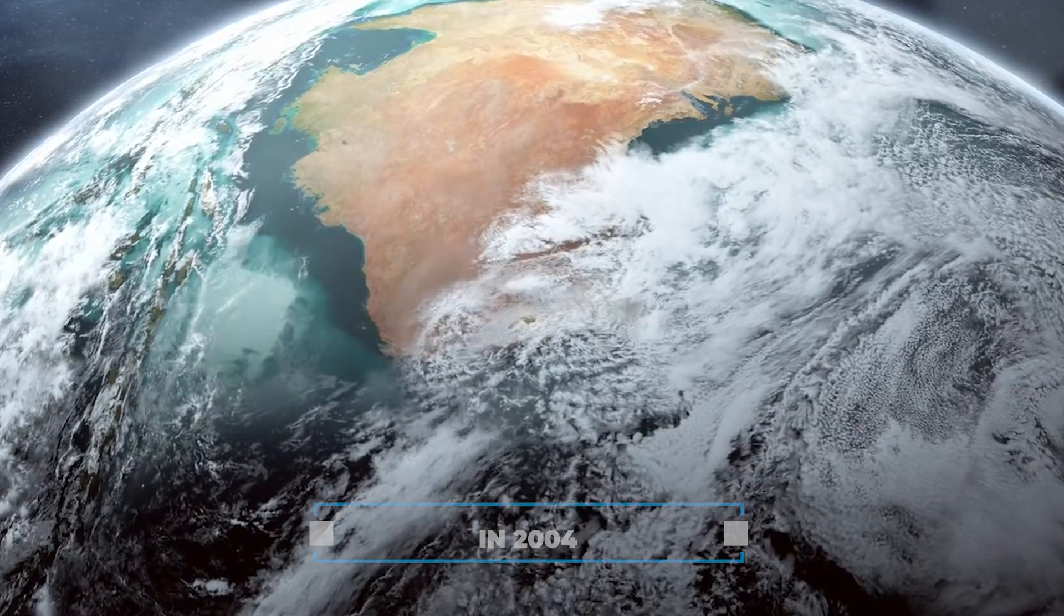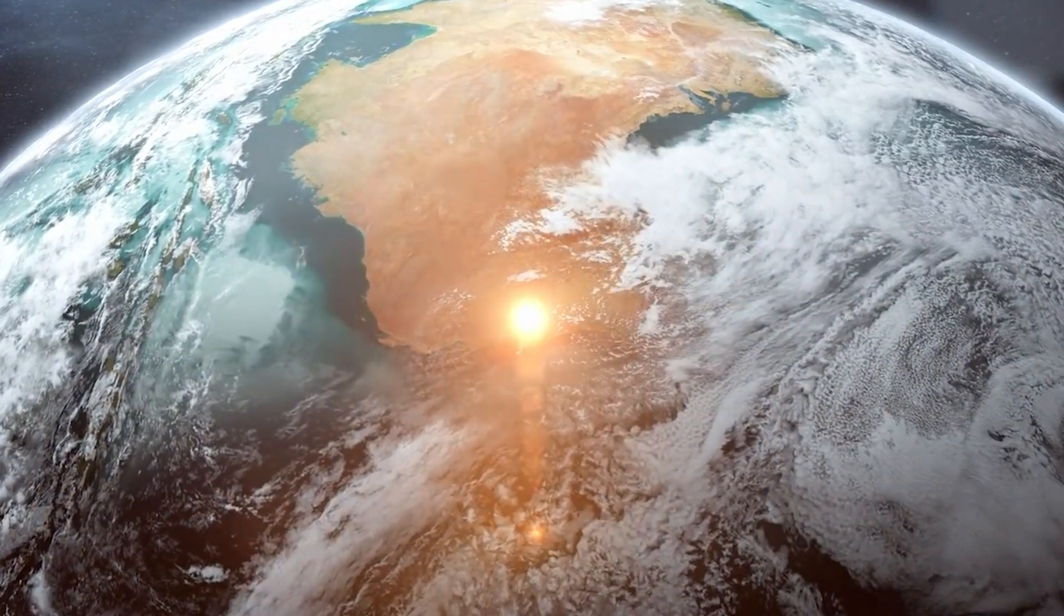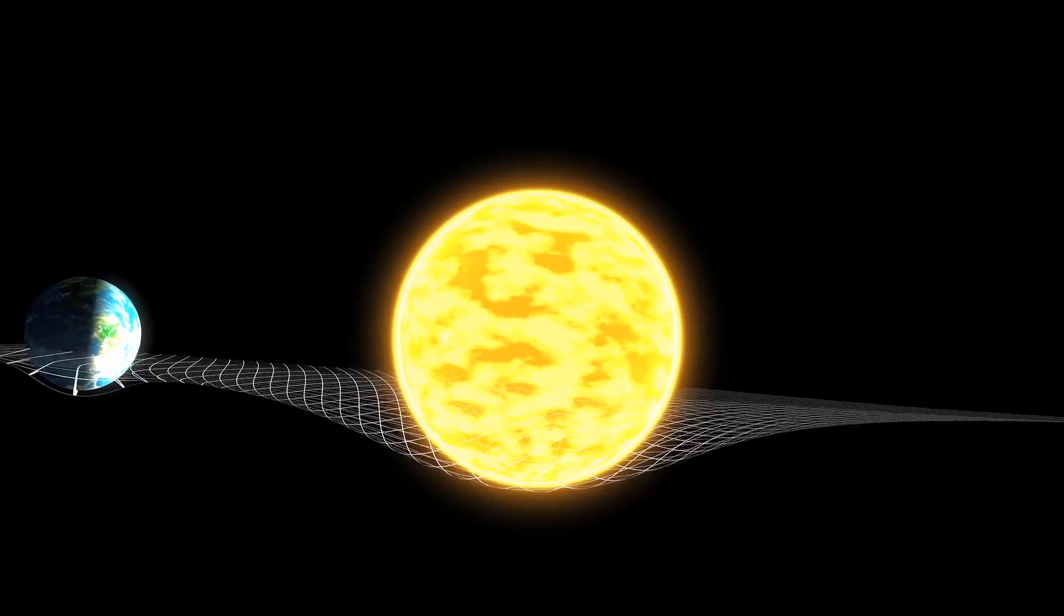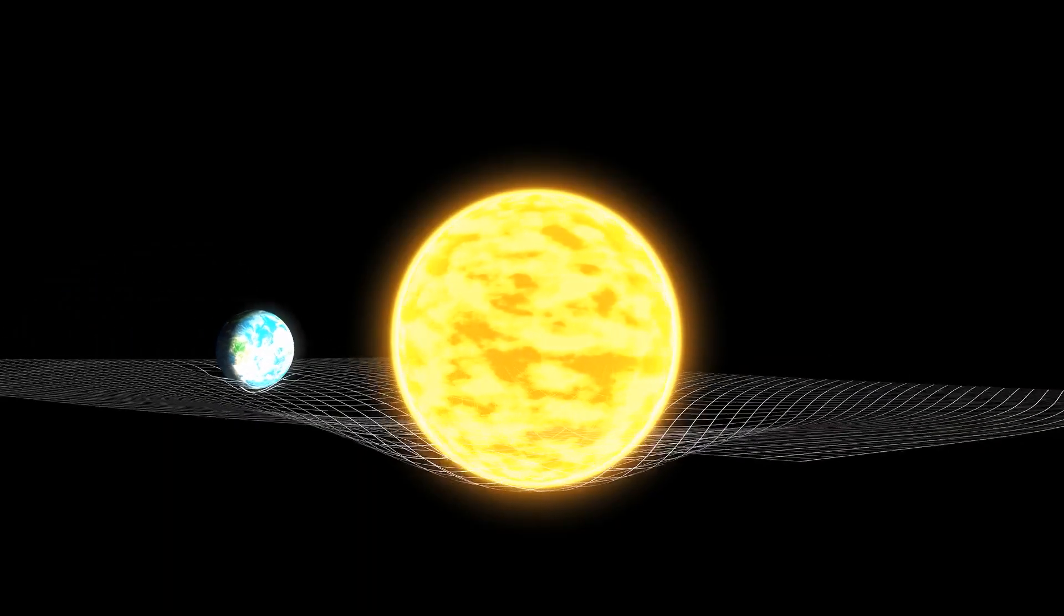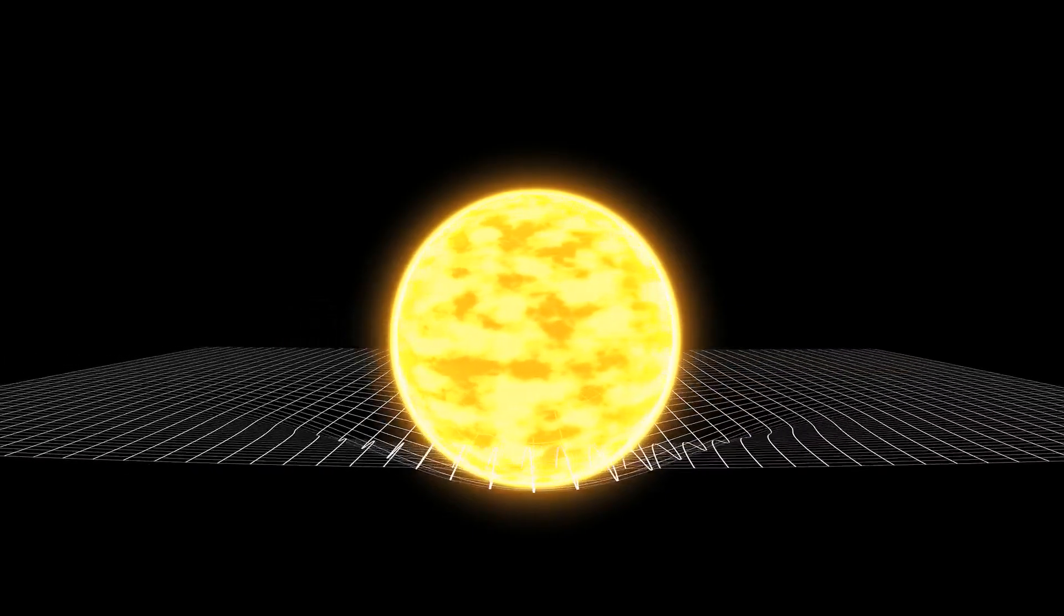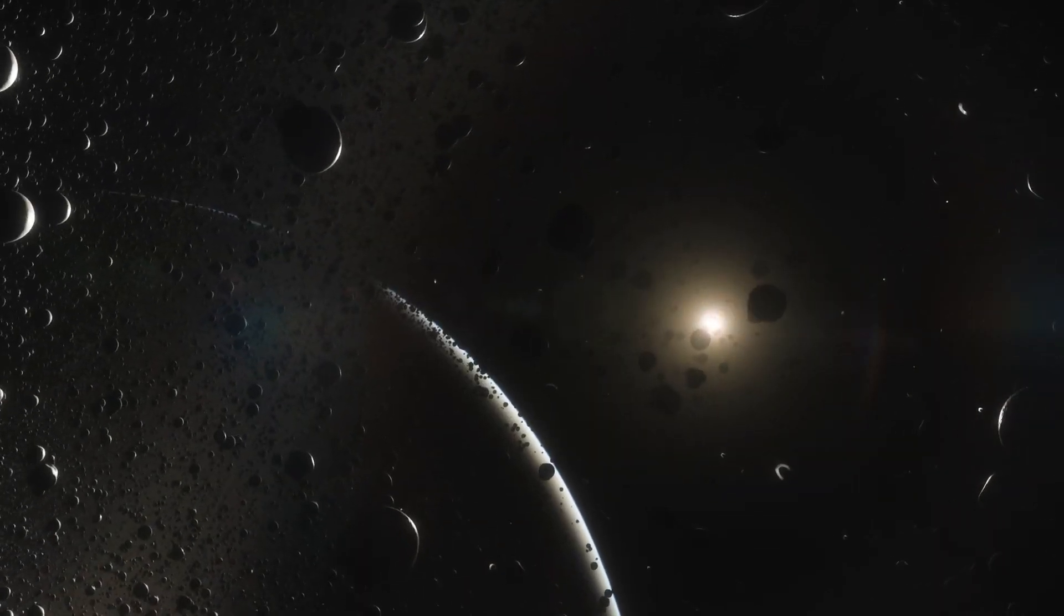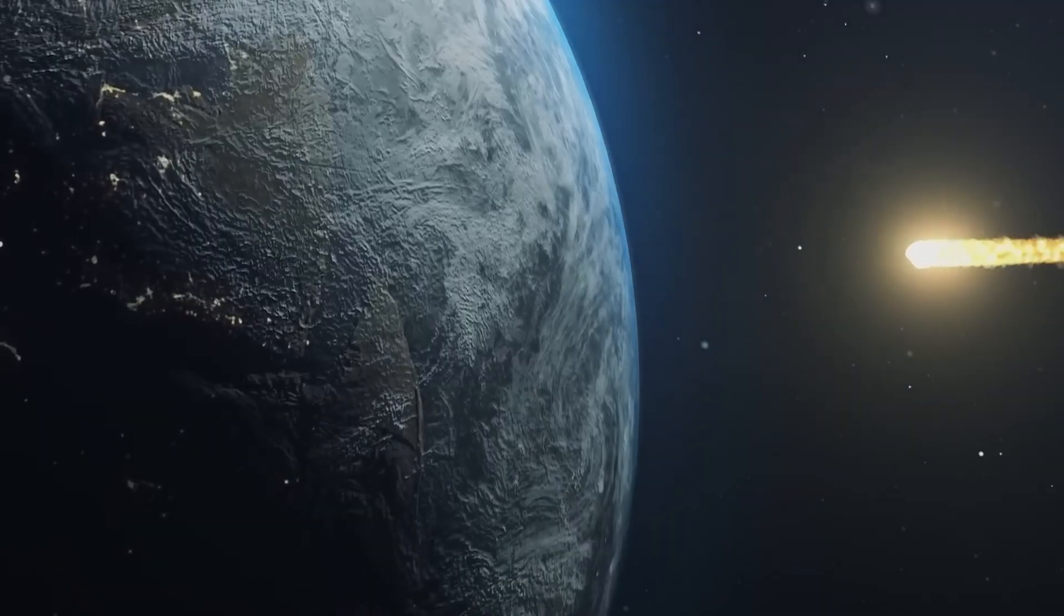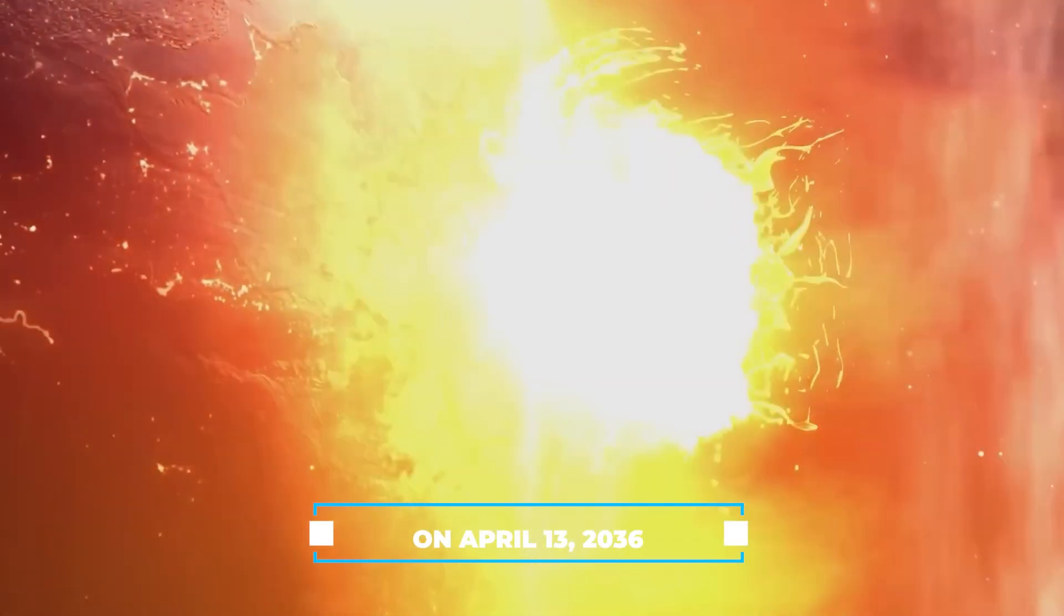In 2004, scientists got a bit worried when they thought there was a 3% chance it might hit Earth in 2029. But as scientists studied it more, they found out it would go through a gravitational keyhole, a small space that changes how things are pulled by gravity. This made them think the asteroid might hit on April 13th, 2036.